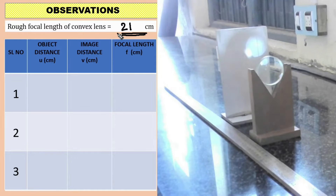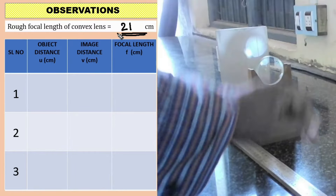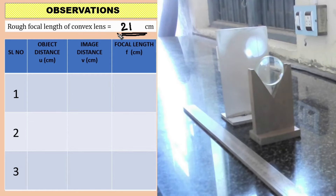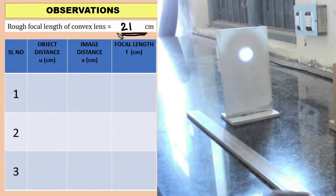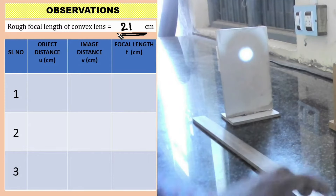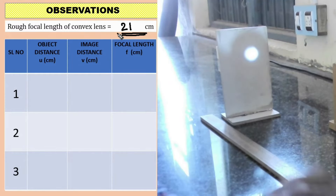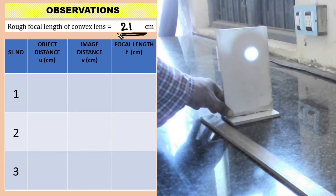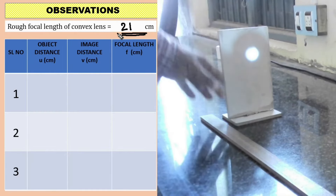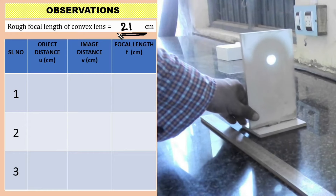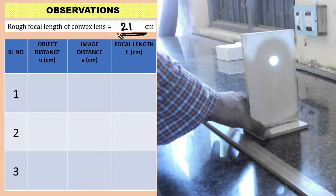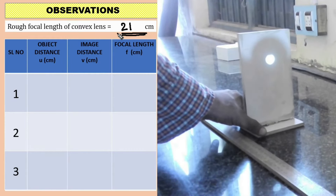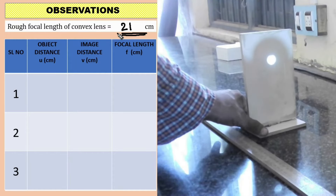The actual object, which is the pin, is placed at a distance more than 2f — that is, more than 42 centimeters. We are not using the concave lens here, only the convex lens. The object distance is roughly 50 centimeters. The corresponding image is formed, and the screen position is adjusted using the trial and error method to find the clear image.